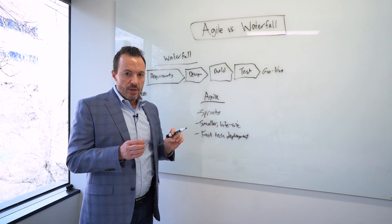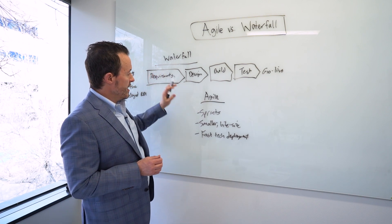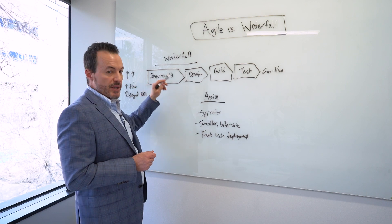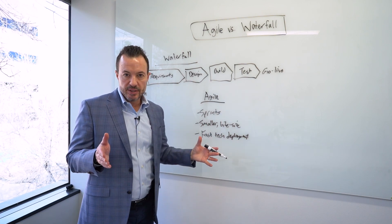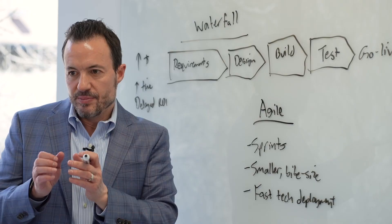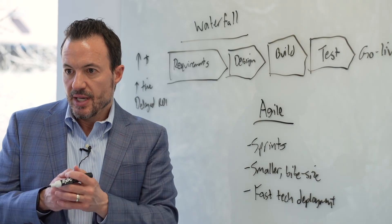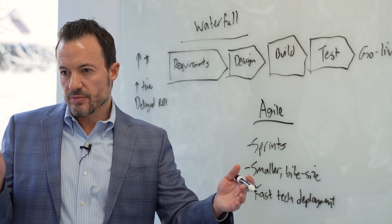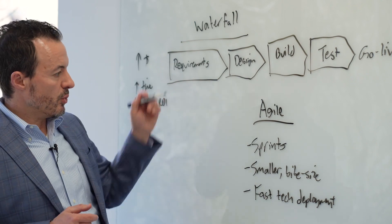When you have an agile deployment, you're not spending the time up front to define your requirements enterprise-wide in great detail. You might focus on a small subset of requirements, build and test the software quickly, and get it into end users' hands to get their feedback. But you're not doing it for the entire organization across the entire enterprise, generally speaking, as you would with waterfall.